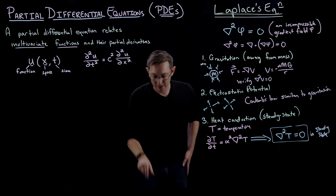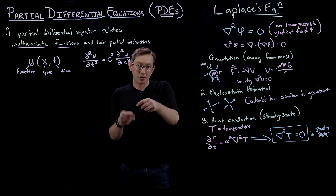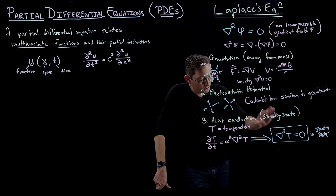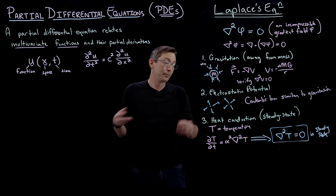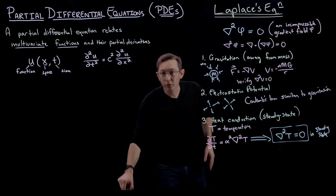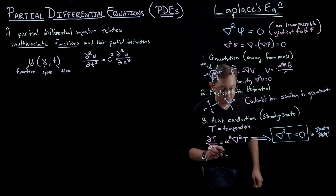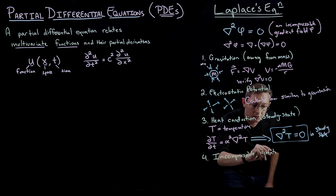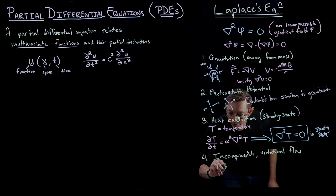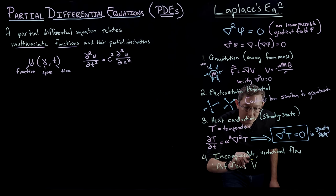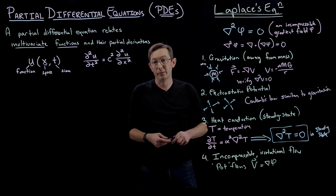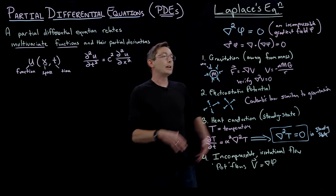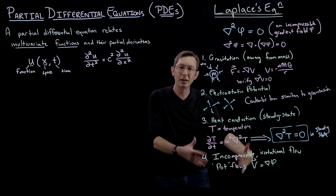For example, if I have some thin metal rod and it's insulated on the ends and I hit it with a blow torch in the middle, the steady-state temperature distribution will satisfy Laplace's equation. The fourth example we talked about is incompressible irrotational flows — so-called potential flows — where I have a vector field equal to the gradient of phi, where phi satisfies Laplace's equation. This is a very useful category of fluid flows used to design aircraft and similar things.